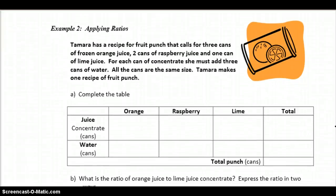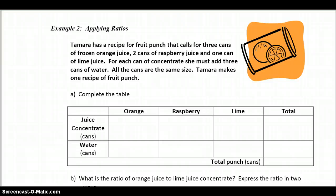Next up, Tamara's got a recipe for fruit punch that calls for 3 cans. I'm going to do some highlighting as we read here. 3 cans of frozen orange juice. 2 cans of raspberry juice. 1 can of lime juice. 3 cans of concentrate. She must add 3 cans of water. All the cans are the same size, Tamara makes 1 recipe of fruit punch. Lots of information there. But let's see if we can organize a little bit here. Put it in a table.